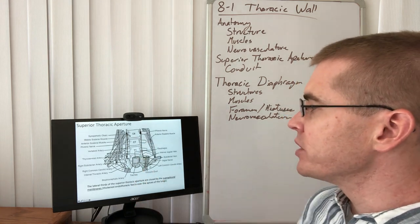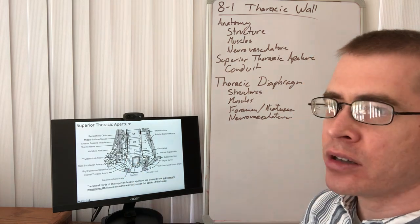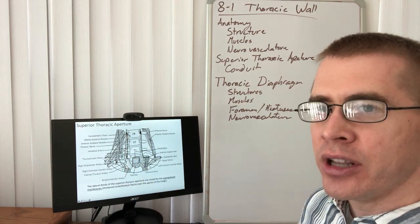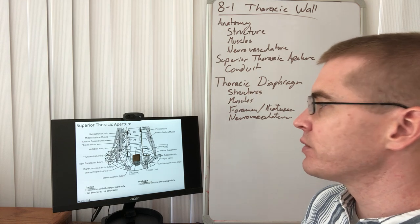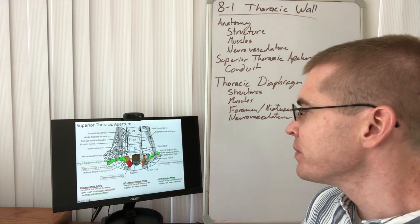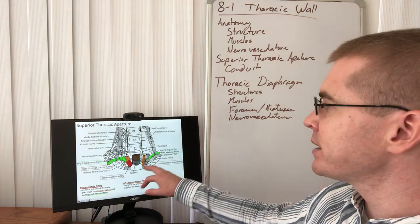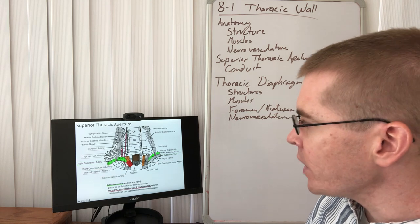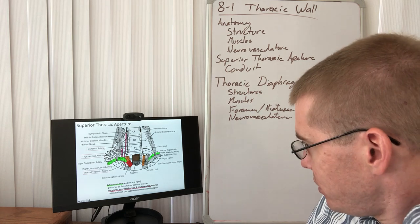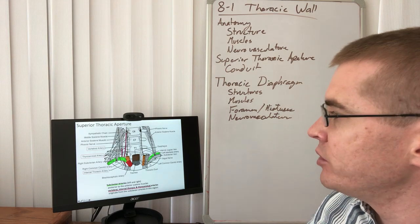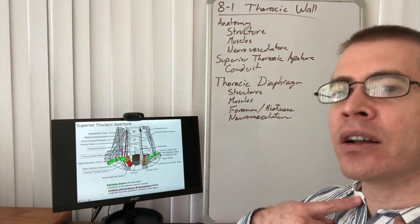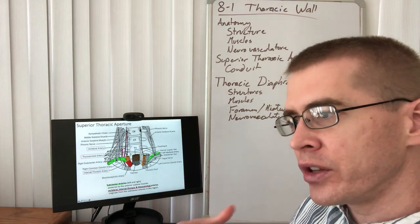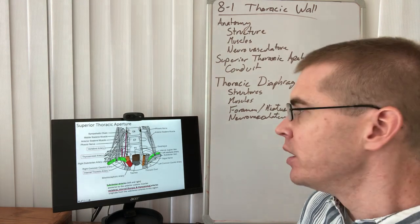The thoracic aperture is a conduit closed off by the superpleural membranes, and within it we see many structures from the neck traveling down into the thorax, including the trachea and esophagus, the brachiocephalic artery on the right side, the carotid and subclavians on the left. The internal thoracic artery travels down on either side of the sternum to supply the anterior thoracic wall and gives off important branches around the heart.